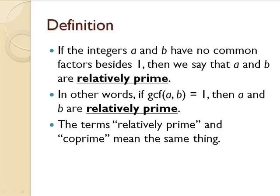But if the greatest common factor of two numbers is 1, then a and b, those numbers, are relatively prime. Another phrase for this is coprime.